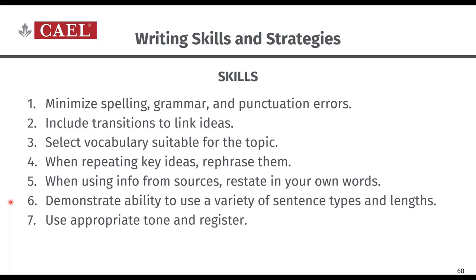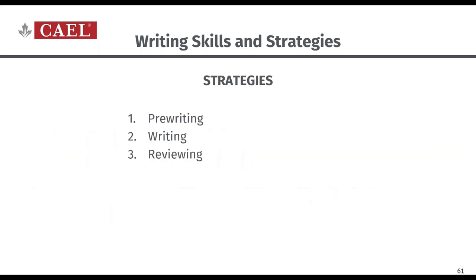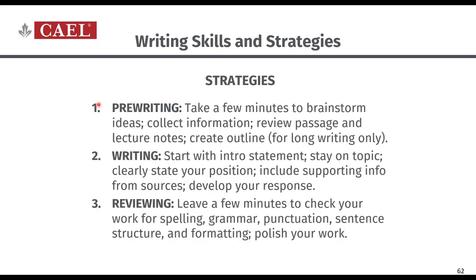It's okay to use key words — words that express ideas specific to the topic — but you don't want to copy entire phrases and sentences. When you repeat an idea of your own that you've already introduced, rephrase it to demonstrate your range of vocabulary. And when using information from the reading or the lecture, rephrase it in your own way. Use a variety of sentence types and lengths — simple, compound, complex, and compound-complex. And use an appropriate tone and register for academic writing: formal language and an impartial, non-judgmental tone.